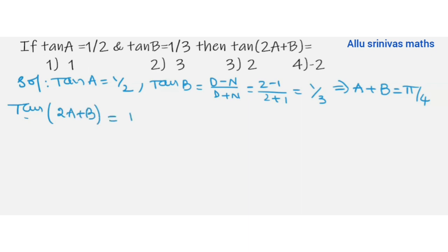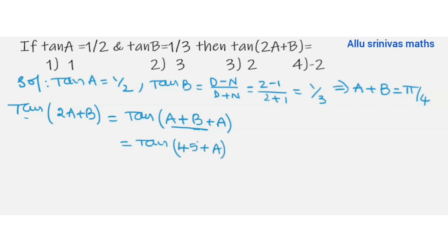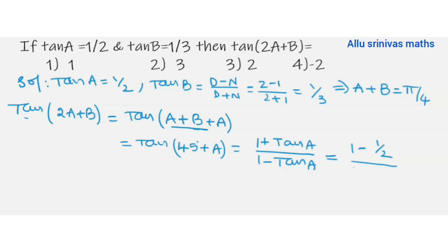Using the shortcut: denominator minus numerator by denominator plus numerator gives 2 minus 1 by 2 plus 1 = 1 by 3, which matches tan B. So A plus B equal to 45°, that is π/4. Now tan(2A+B) = tan(45° + A). Applying compound angle formula: tan(45+A) = (1 + tan A)/(1 − tan A). Substituting tan A = 1/2: numerator 1 + 1/2 = 3/2, denominator 1 − 1/2 = 1/2. The 2s cancel and the final answer is 3.